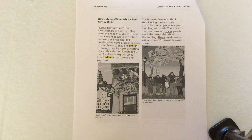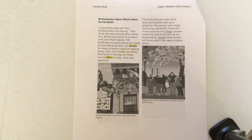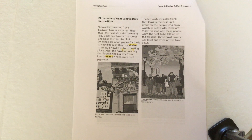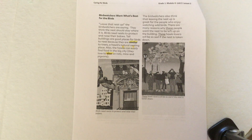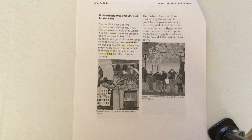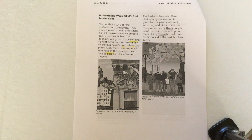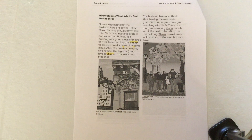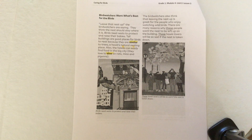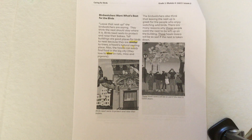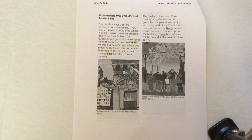Bird watchers want what's best for the birds. Leave that nest up, the bird watchers are saying. They think the nest should stay where it is because birds need nests to protect and raise their babies. Tall buildings are good places for birds to nest because they are similar to trees, a hawk's natural nesting place. Also, the hawks can easily find food in the big city — they love to dine on rats, mice, and pigeons. Bird watchers also think that leaving the nest up is great for people who enjoy watching wild birds. These hawk lovers will be so sad if the nest is taken down.